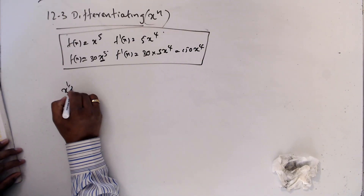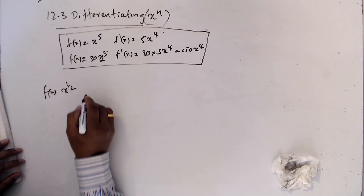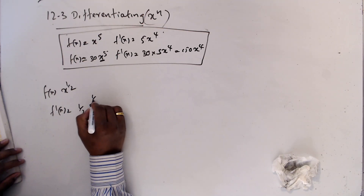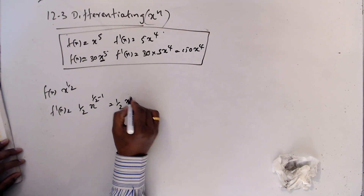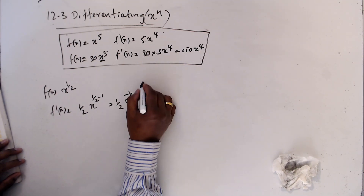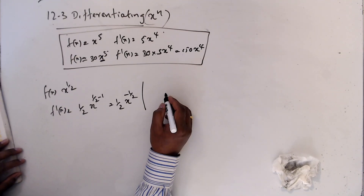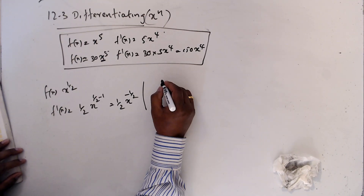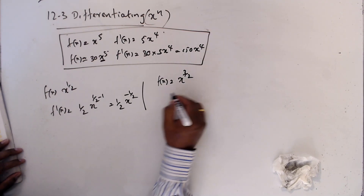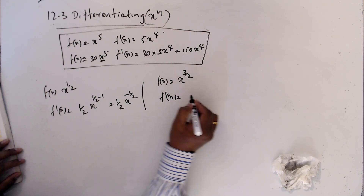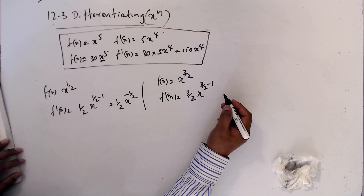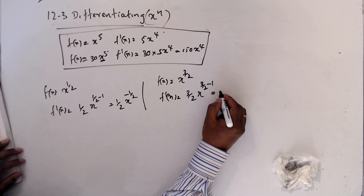Now if we get this kind of sum: if f(x) = x^(1/2), then f'(x) is still the same rule — half·x^(1/2 − 1), which is half·x^(−1/2). Then if f(x) = x^(3/2), f'(x) = (3/2)·x^(3/2 − 1). Simplify and keep the answer.